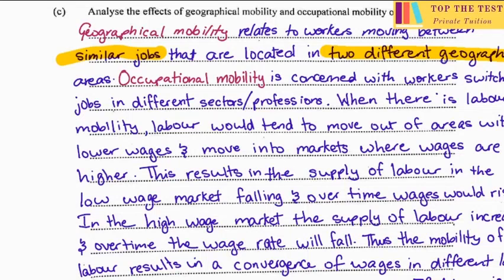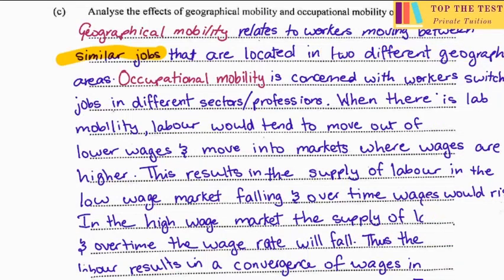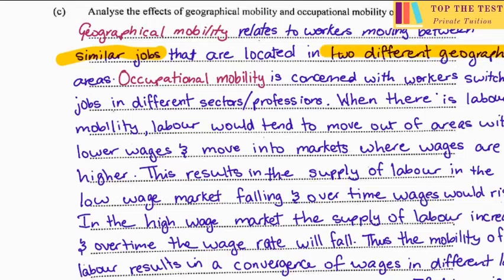Occupational mobility is concerned with workers switching jobs in different sectors or professions — you can be in the same location but switching professions, for example a teacher becoming an engineer or an attorney. When there is labor mobility, labor tends to move out of areas with lower wages and into markets where wages are higher.